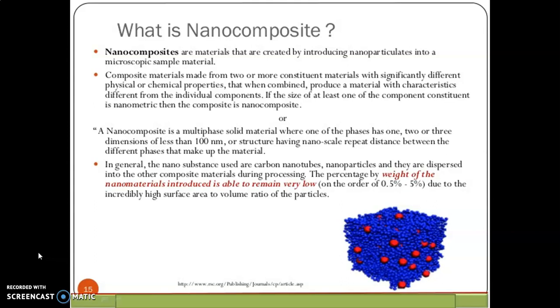Adding the other metal that is creating the composites. Composite materials made from two or more constituent materials with significantly different physical or chemical properties. That means, when combined, produce a material with characteristics different from individual components. Actually, composites are created. It is nothing but a mix of two or combination of two or more materials.